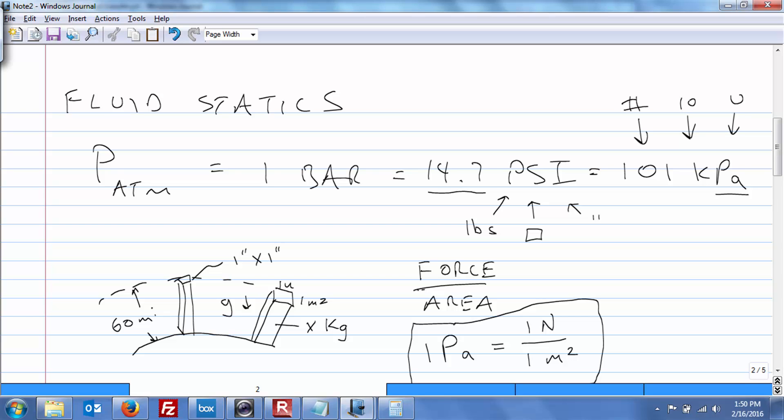So you pump up your bicycle tires, your car tires. It's 35 PSI. Well, it's 35 PSI above the 14.7. If it was just at 14.7, your tires would be flat. They'd just be at equilibrium.